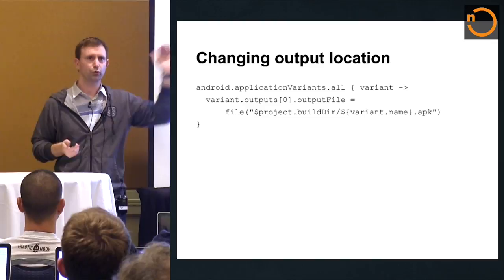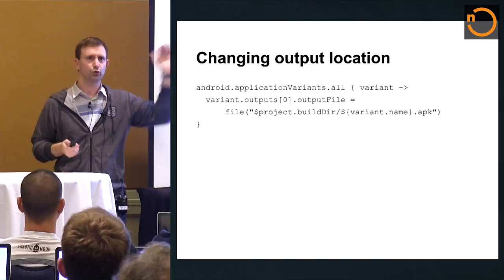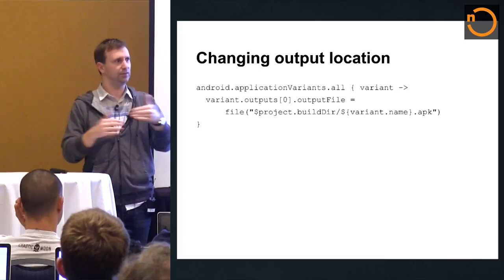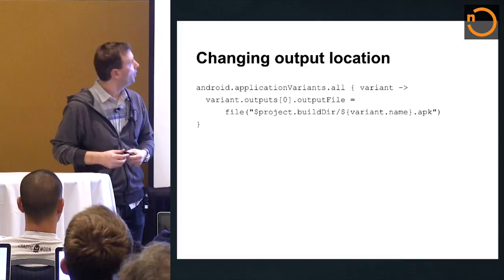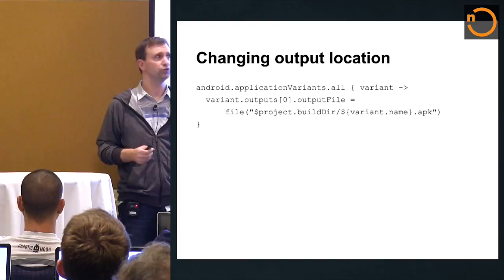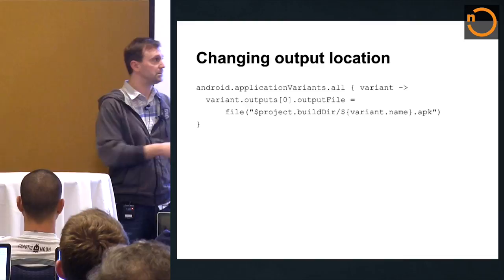I still see some developers doing project.afterEvaluate and then .each, because they know the variants are there by then — we do all our work in afterEvaluate. But using .all is simpler. Here, what we do on each variant is change the output to be variant.name. The part we changed not too long ago — about a month ago — is that you used to just set variant.outputFile, but now that we've introduced splits, a variant is really more than one APK.